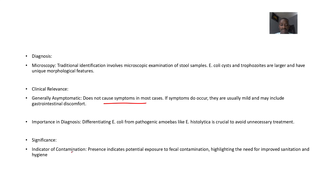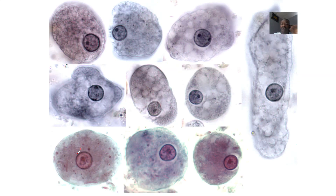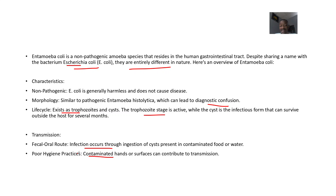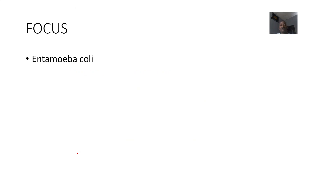The significance of Entamoeba coli is that it serves as an indication of contamination. So if you see Entamoeba coli, it suggests there is contamination, and although it might not cause problems itself, it signals that a problem could arise.